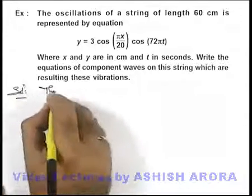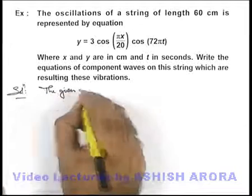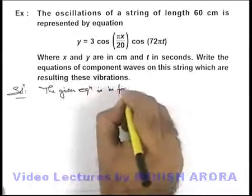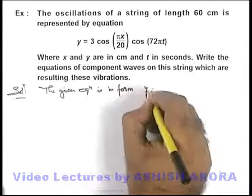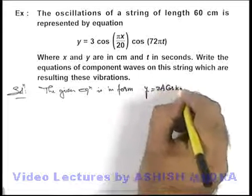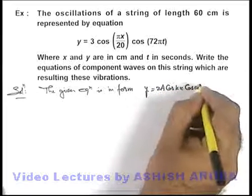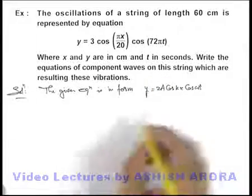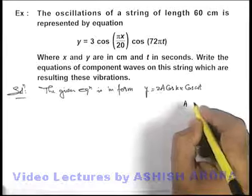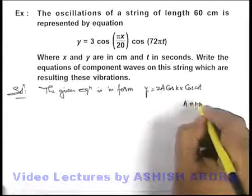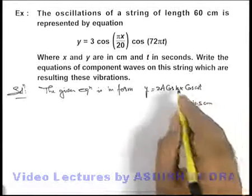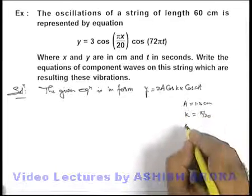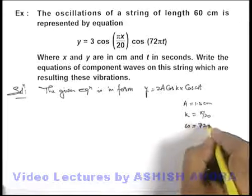Here we can see that the given equation is in the form which we already studied: 2A cos(kx) cos(ωt). If we compare these equations, we can see the amplitude of component waves is 1.5 centimeters, the value of k is π/20, and the value of ω is 72π.